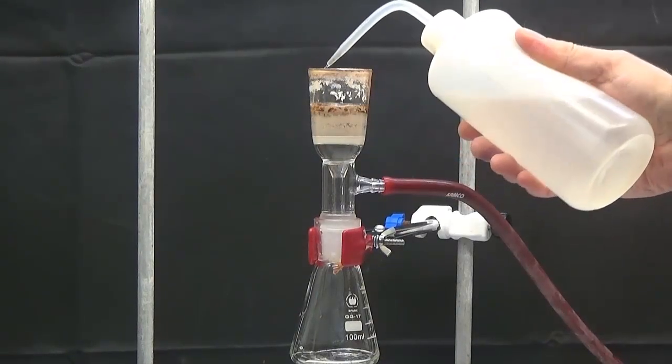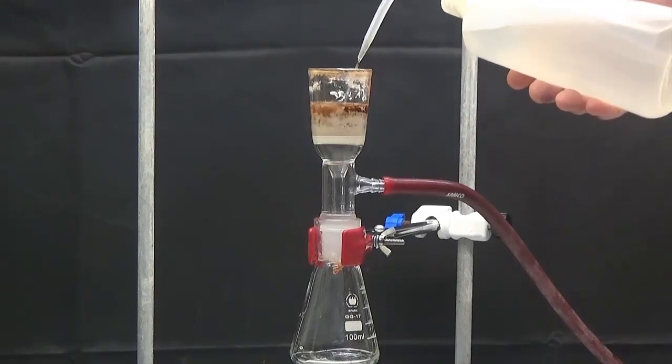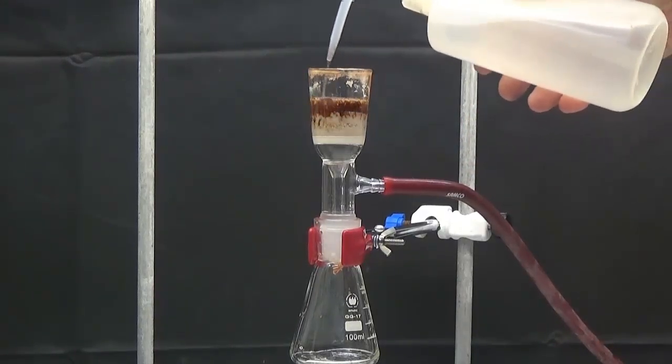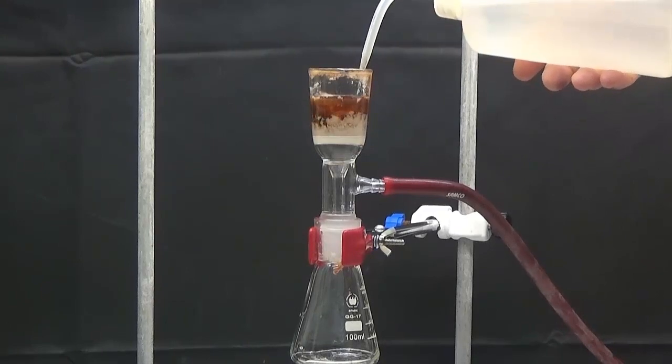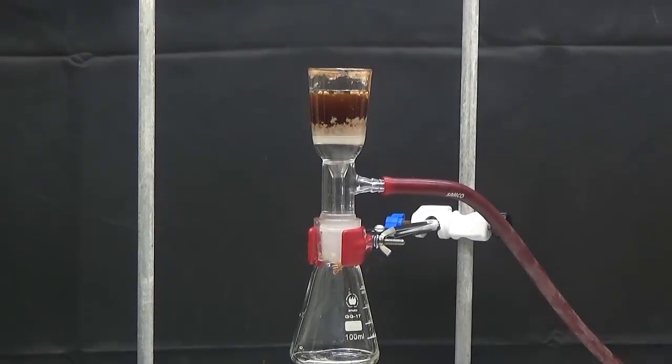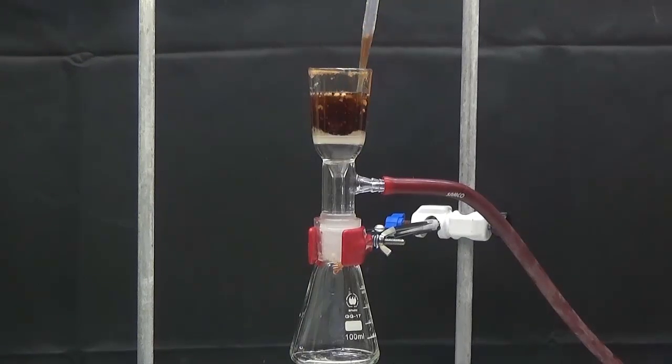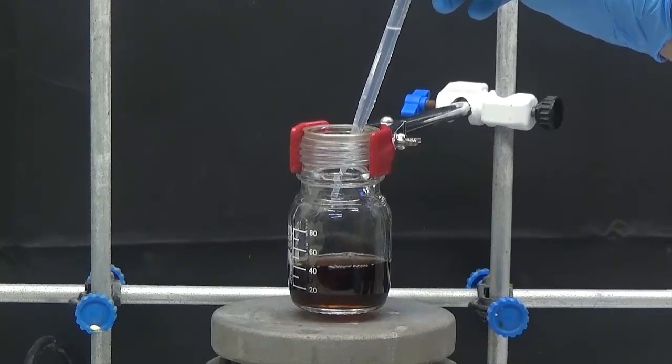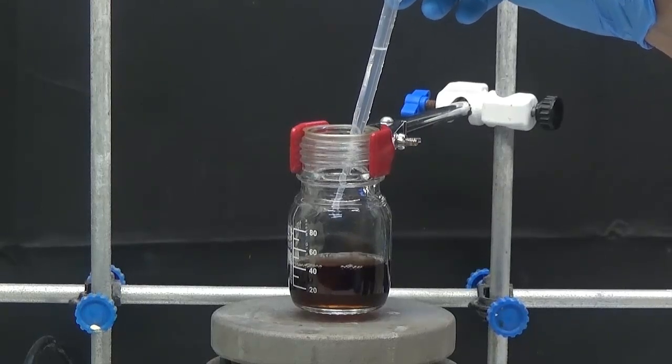Dilute the solid in the minimum quantity of distilled water. Add 15% hydrochloric acid to pH 1 or 2.